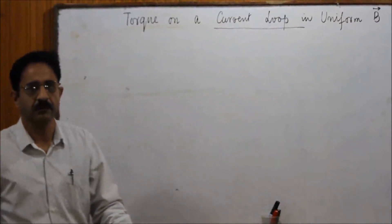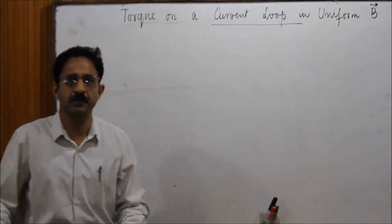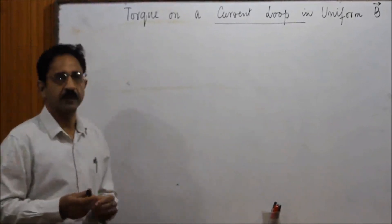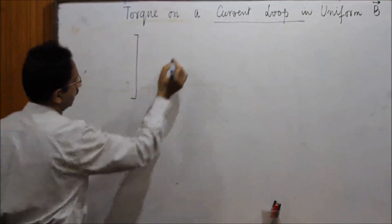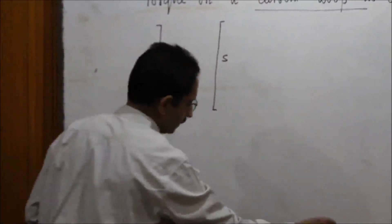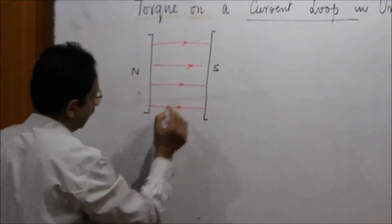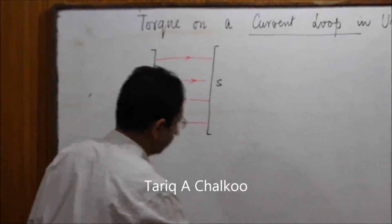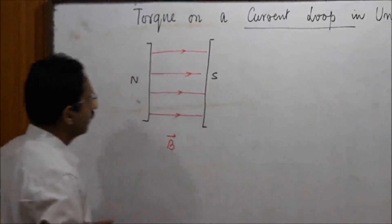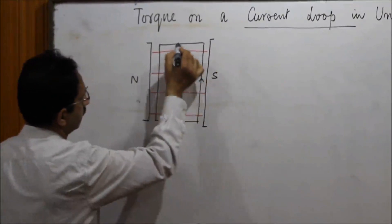Welcome to today's lecture. Today we would like to find out the concept of torque experienced by a current loop placed in a uniform magnetic field. A uniform magnetic field is one where the magnitude and direction remain the same throughout a region of space, represented by straight and parallel magnetic lines of force. We have placed a current carrying rectangular loop carrying a steady current I in this field.